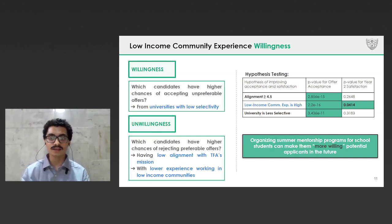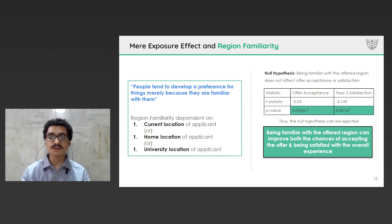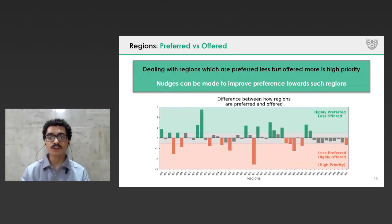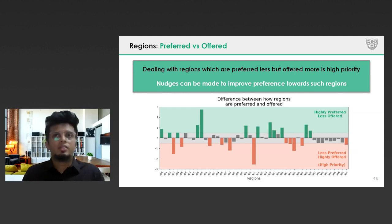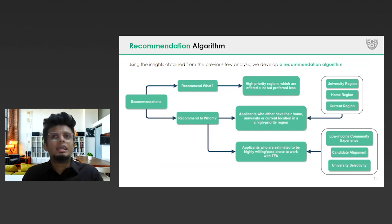We also felt region familiarity to be a relevant factor for applicants. If applicants can work near their current location, home, or university, the mere exposure effect prompts them to not only accept the offer but also have a pleasant experience throughout. To understand which regions to recommend, we computed normalized scores representing how different regions are preferred by applicants and also offered by TFA. As shown, the regions which pose a problem are the ones with negative values — that is, the red bars. These regions are the ones where TFA requires a lot of teachers but not many applicants prefer them. Such regions need to be identified and prioritized by TFA beforehand so that TFA can nudge people towards them. We recommend the pre-identified high priority regions to two types of applicants: first, those who are familiar with the region, and second, those who are estimated to be highly willing.